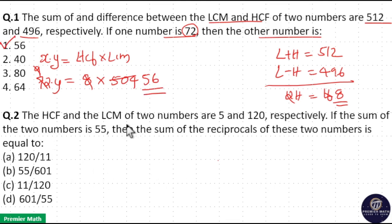Same way here, the HCF and LCM of two numbers are 5 and 120. If the sum of two numbers is 55, then the sum of reciprocals of these two numbers is equal to? Take the numbers as x and y. The product of these two numbers equals the product of their HCF and LCM, which is 5 times 120.